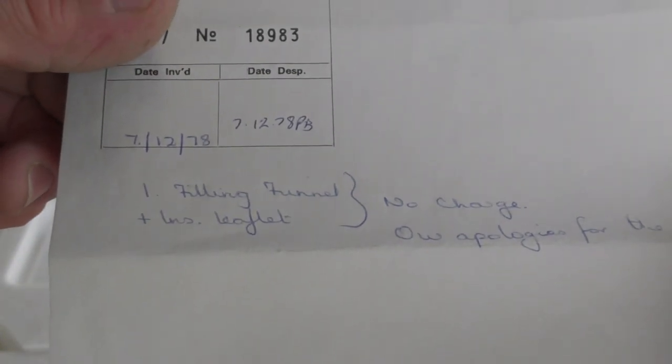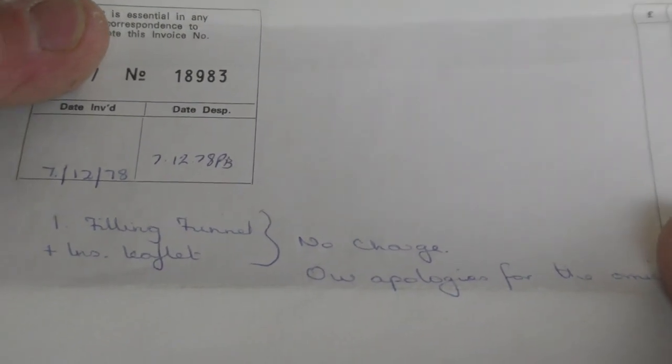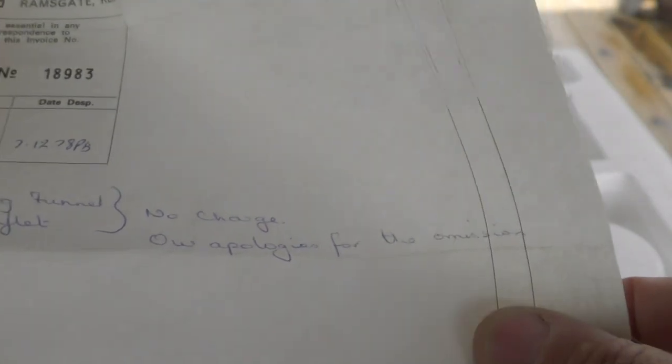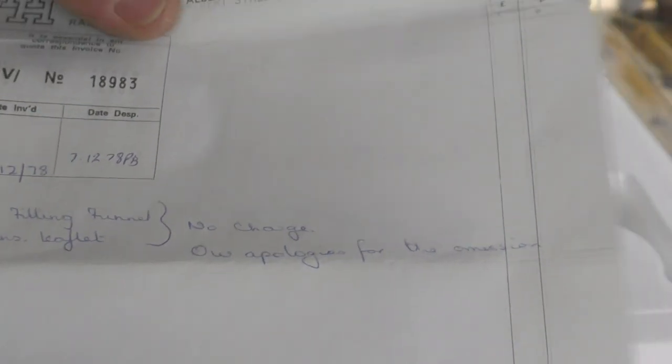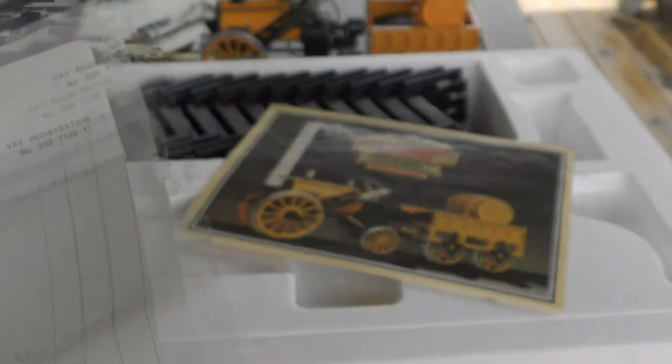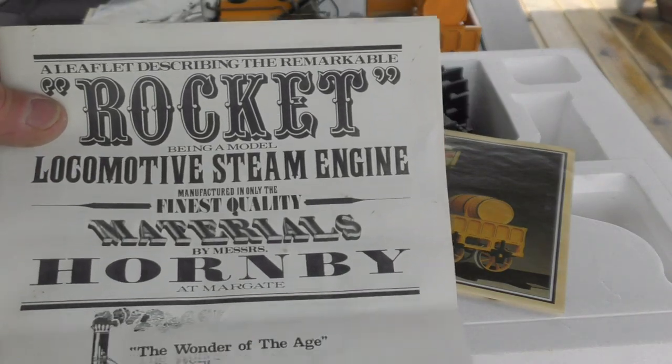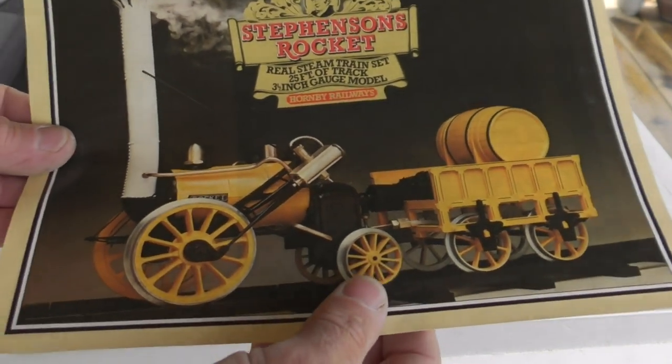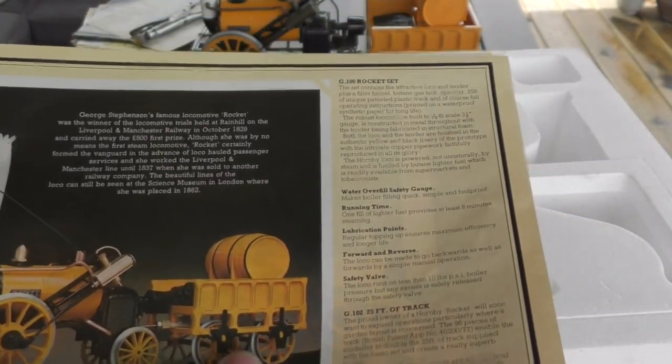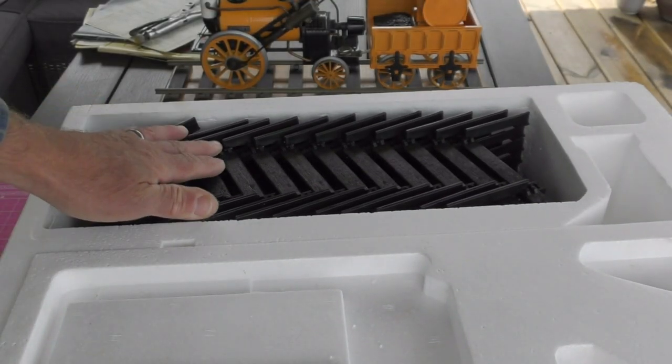Where was I? Hornby Hobbies Rovex service centre Albert Street Ramsgate, there's a date on there, 7th of the 12th 1978. Dispatch date 7th of the 12th and it says one filling funnel, one instruction leaflet, no charge, apologies for the emission. Obviously when the model was bought some items missing, so quite a nice thing to have. We've got another lot of pieces of track. These indeed are the instructions that were supplied. Another one of those really nice publicity leaflets.